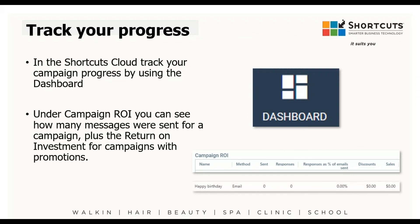So how do you track the results? As long as you've linked your campaign to a discount reason, you'll be able to track it under the cloud dashboard. The dashboard is a reporting tool — scroll all the way to the bottom and you'll see the campaign ROI. It shows the name of the campaign, the method, how many were sent, and the sales that have come through, which is amazing. It's really important to make sure what you're sending is bringing clients back in. If it's not working, consider changing the offer, wording, image, or subject line, and keep updating every 6 to 12 months to keep it fresh.